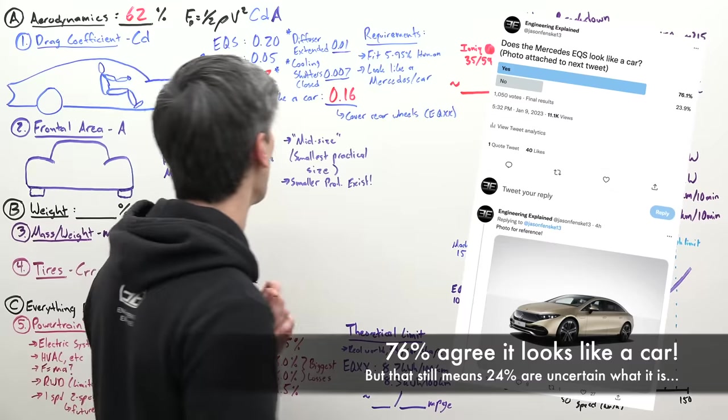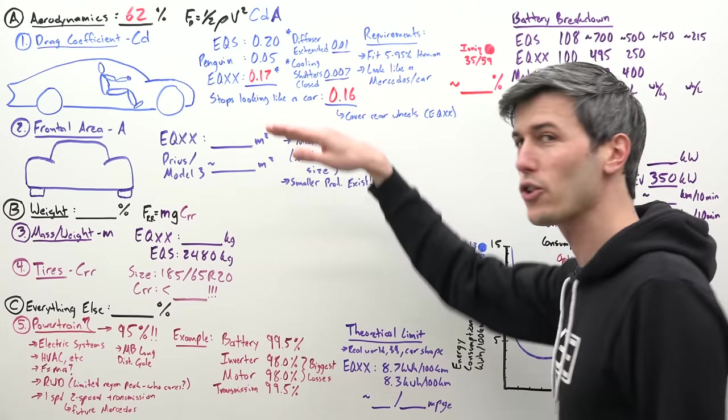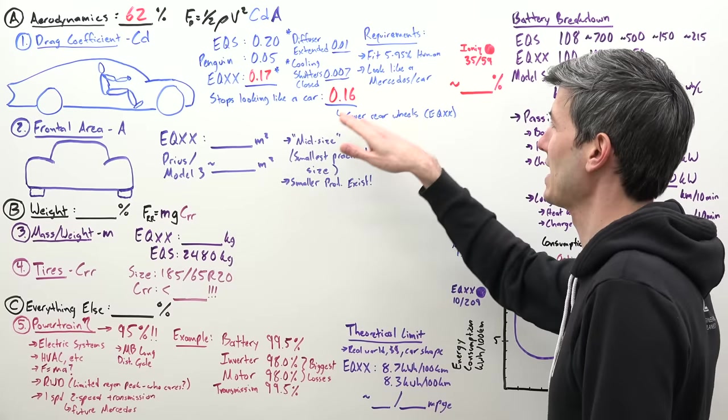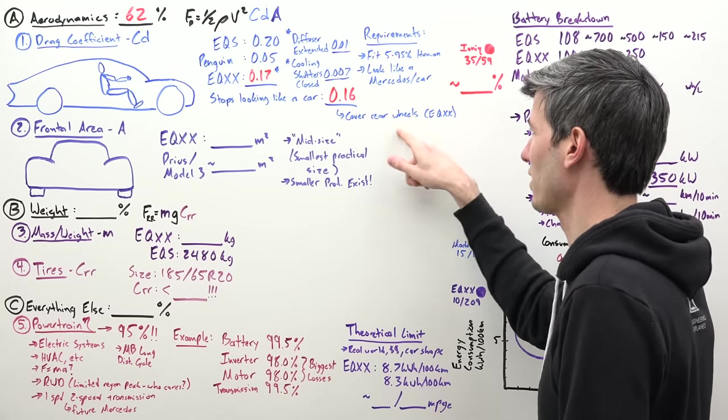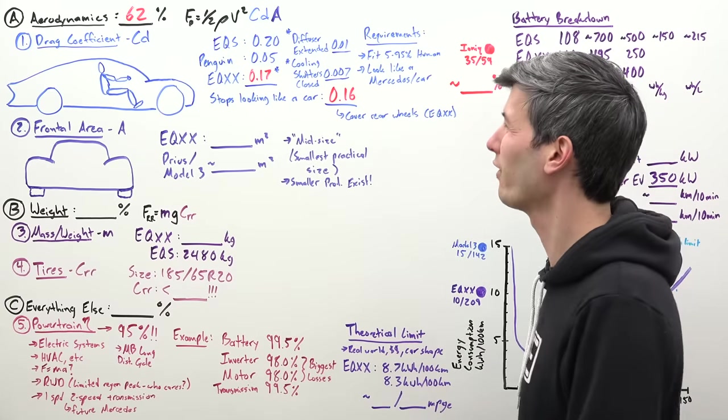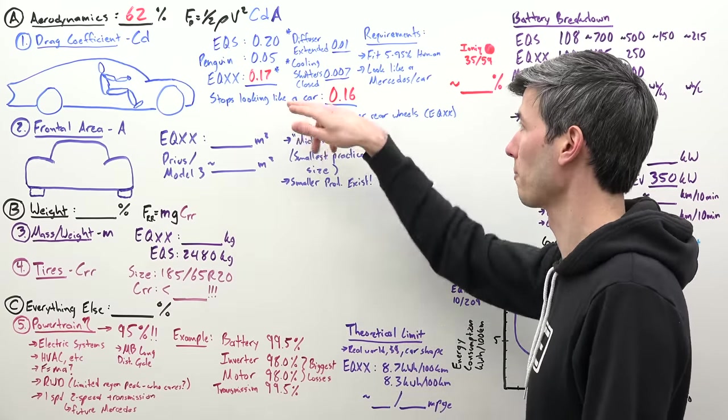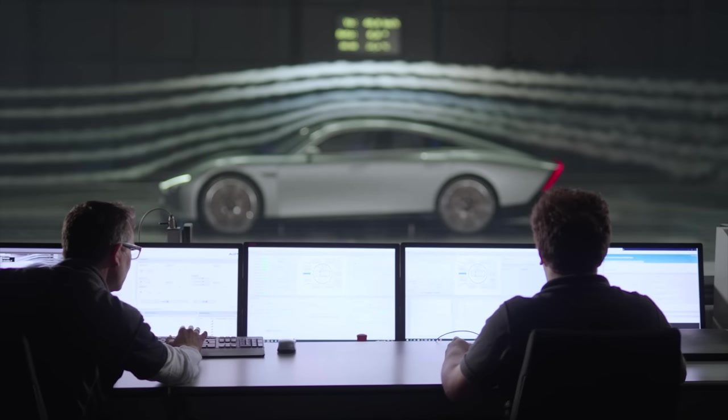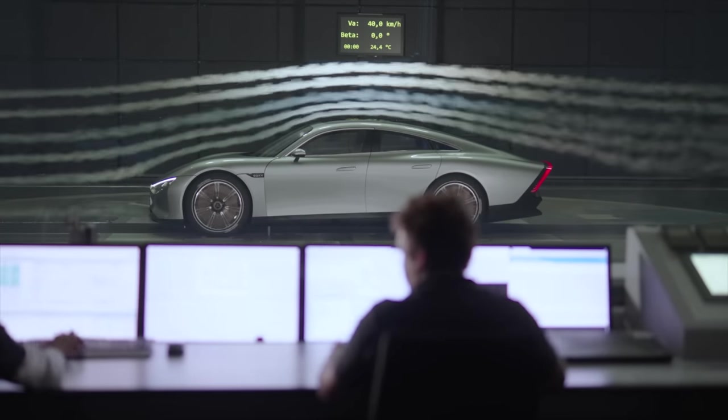Honestly if you look at the EQS at 0.2, does that thing look like a car? I guess kind of. But the point is you get towards a limit. Mercedes says that limit's 0.16 unless you start covering the wheels. Realistically that's with some things happening that are hard to achieve with a production car. So we're towards the limit when it comes to drag coefficient.